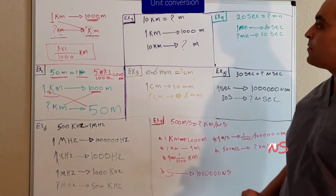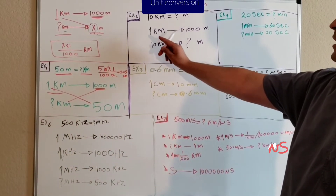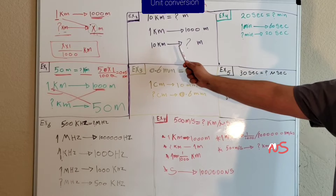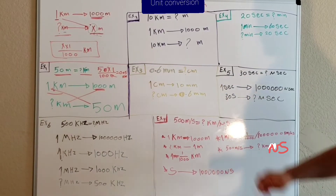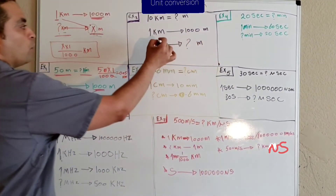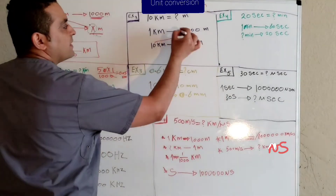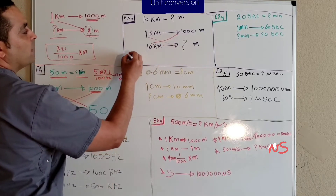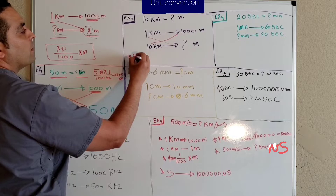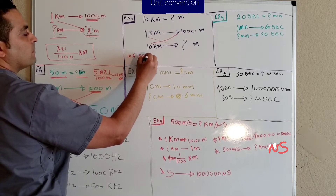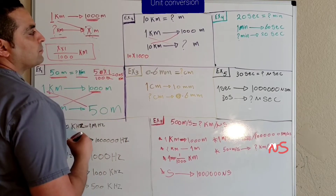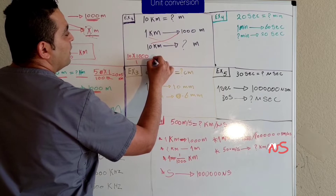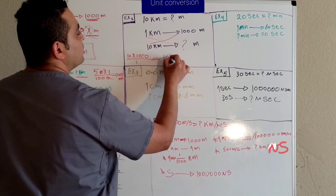Example number two: if we have 10 kilometers and we need to convert it to meters. One kilometer equals one thousand meters, so ten kilometers equals how many meters? We multiply 10 by one thousand and divide by one, so it equals ten thousand over one — the result is ten thousand meters.